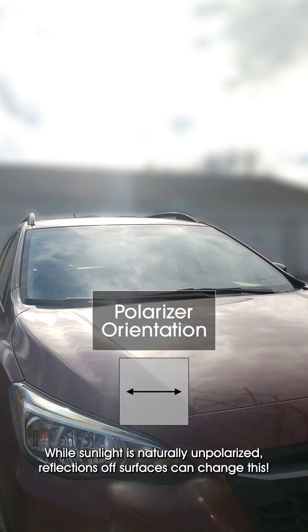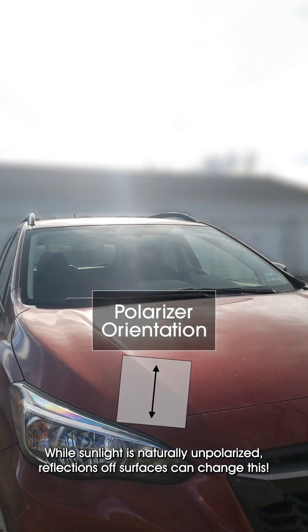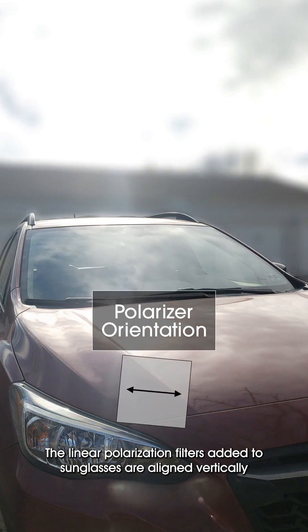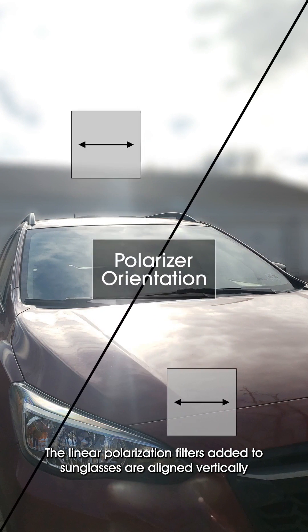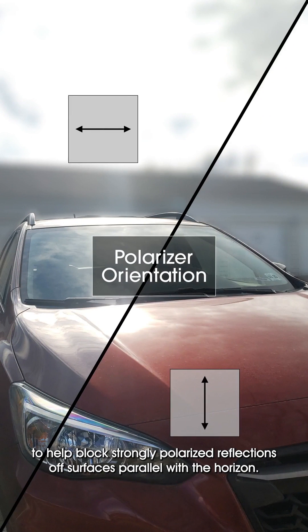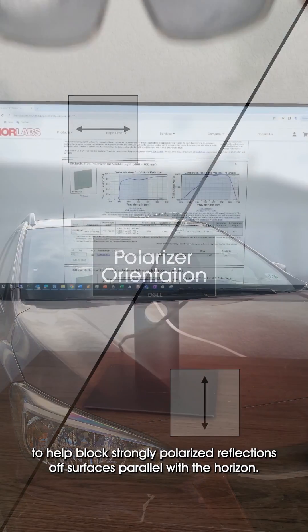While sunlight is naturally unpolarized, reflections off surfaces can change this. The linear polarization filters added to sunglasses are aligned vertically to help block strongly polarized reflections off surfaces parallel with the horizon.